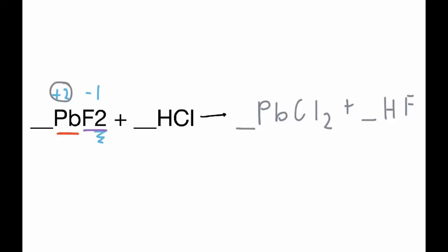Now we balance the equation. On each side we have 1 Pb. We have 2 fluorines on the left and 1 on the right, so we add a 2 in front of HF. That also affects the H, so we add a 2 there. Now we have 2 H's on both sides. That also applies to Cl, so we have 2 Cl's on both sides, and we have a balanced equation.